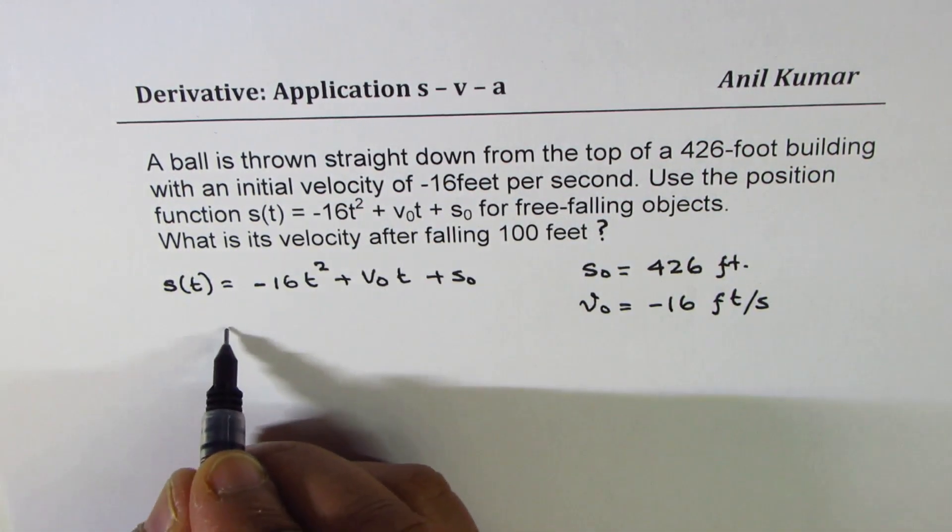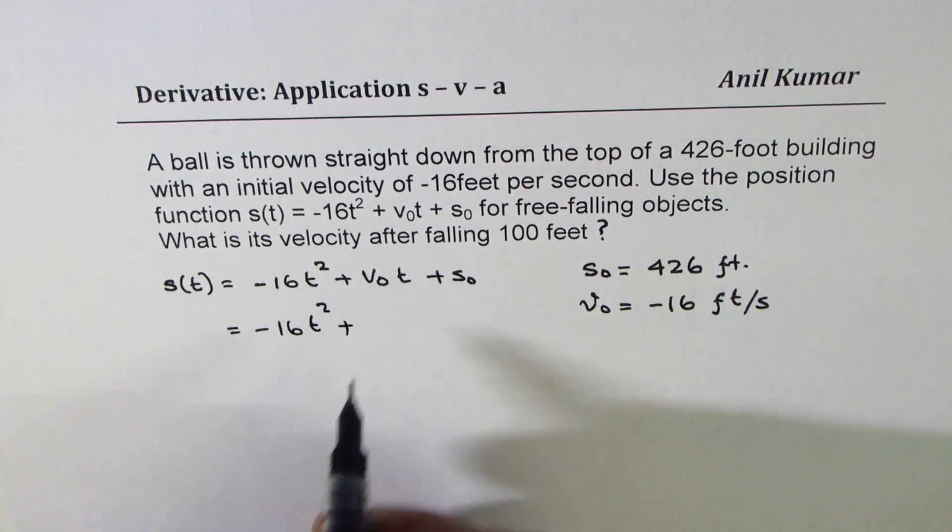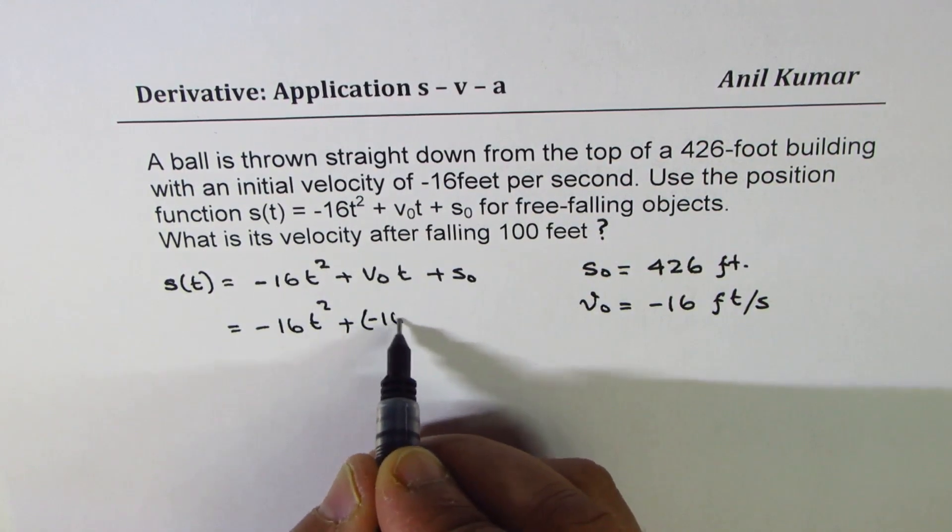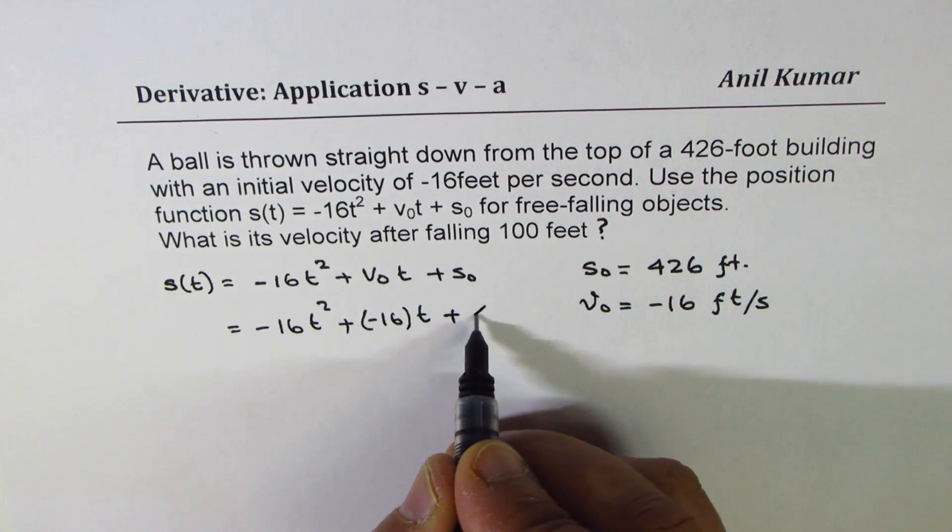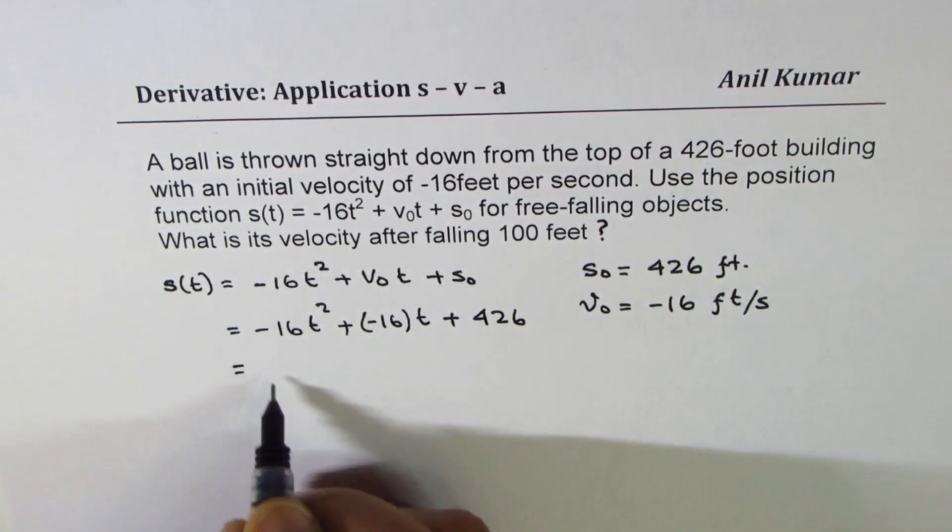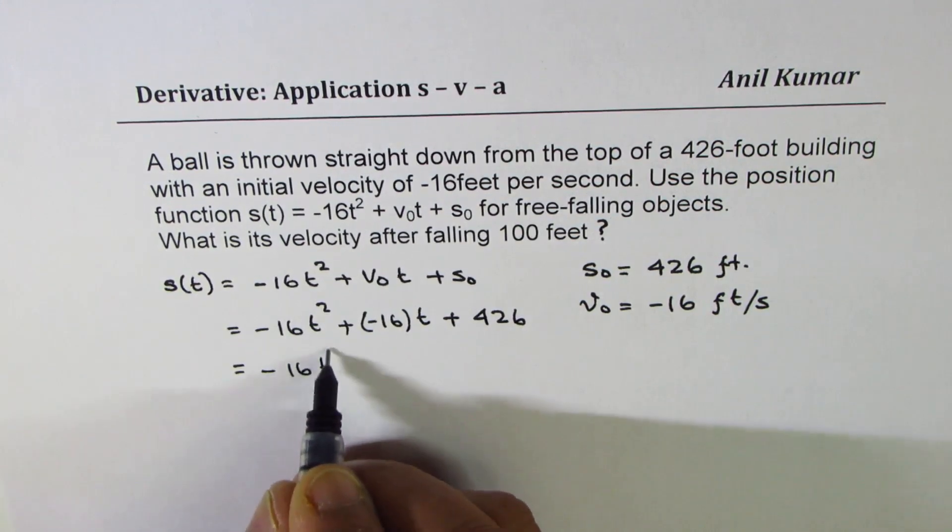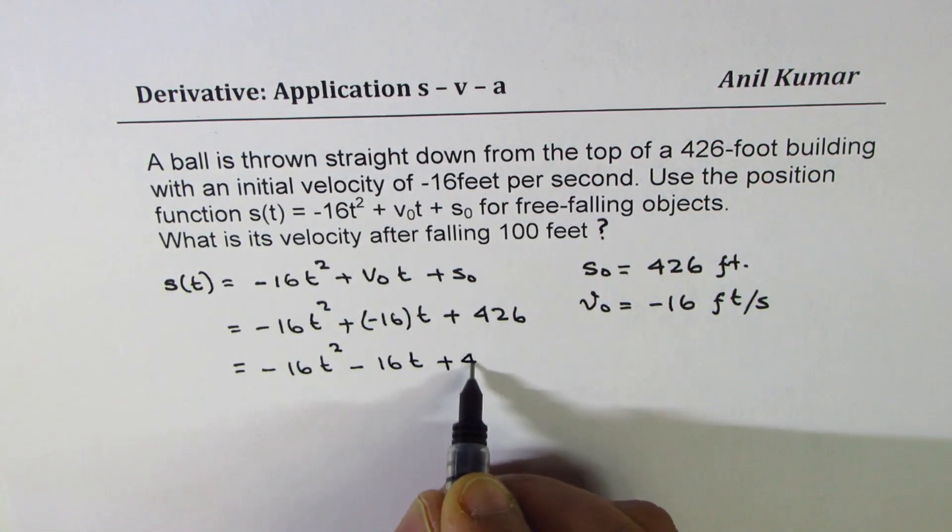If I substitute these values, I get -16t² plus initial velocity of -16t plus height 426. So that becomes the expression, which could be written as -16t² - 16t + 426.